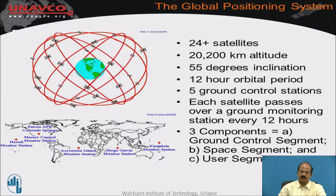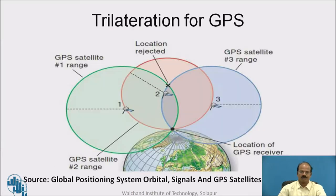The GPS is supposed to have three components: ground control point, the space segment, and the user segment. At the bottom you can see the planimetric view of the whole world around which the satellites used to move. This is the classical example of how exactly GPS functions.